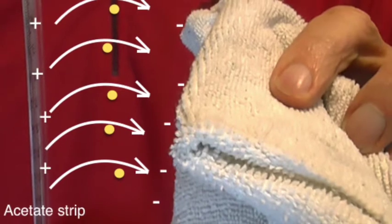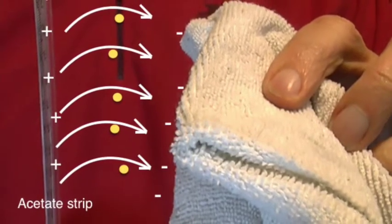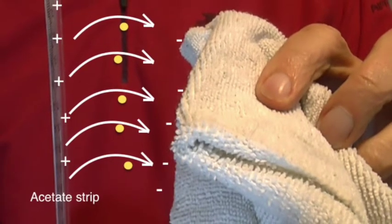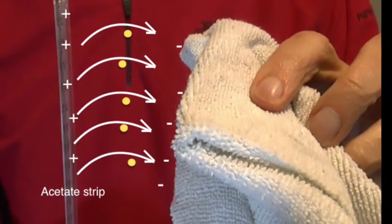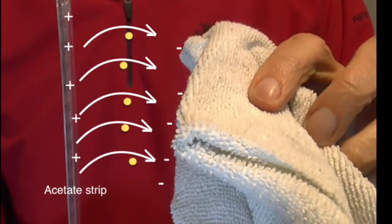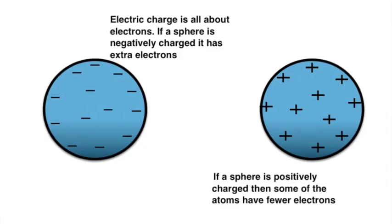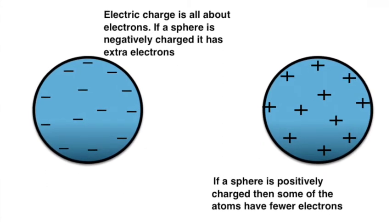Both the ruler and the cloth become charged here because electrons on the outside of the ruler are rubbed off and transferred to the cloth. The ruler is positively charged because it's lost some electrons and electrons are negatively charged, leaving a balance of positive charge behind.